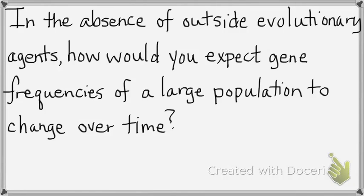In the absence of outside evolutionary agents — so with no evolution — how would you expect gene frequencies of a large population to change over time? With no evolution going on, P and Q would not change. Nothing's causing evolution, so all the gene frequencies — the P's, the Q's — will stay the same.